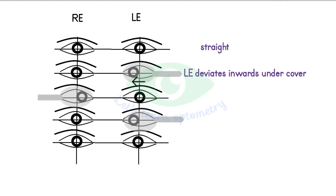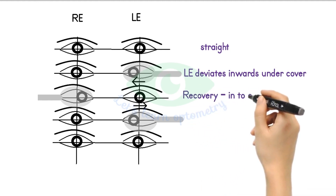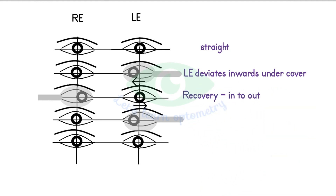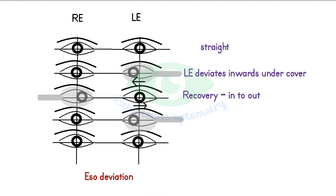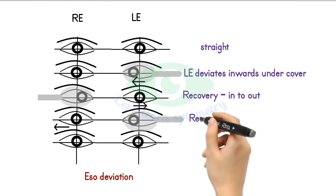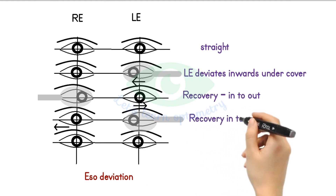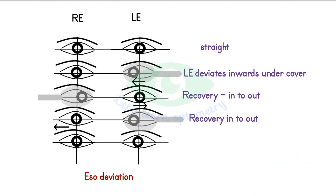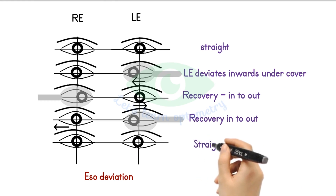We observe the just-uncovered left eye — it moves from in to out, so it is a case of eso deviation. Now quickly move the cover from the right eye to the left eye and observe the movement of the right eye — it also moves from in to out after removing the cover. Both eyes are aligned in the binocular viewing condition.